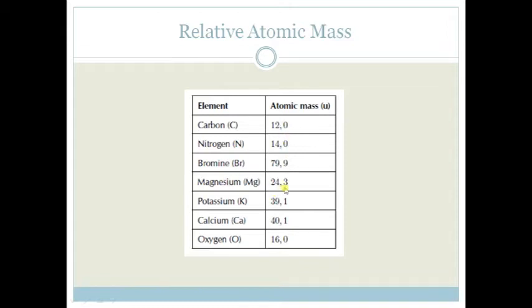Whereas magnesium is 24.3, so you can see that magnesium is almost twice as heavy as carbon. And then you've got oxygen at 16, just a little bit heavier. So do you see that they have compared everything to the carbon? That's what we mean by relative atomic mass. It is relative to the other atoms.